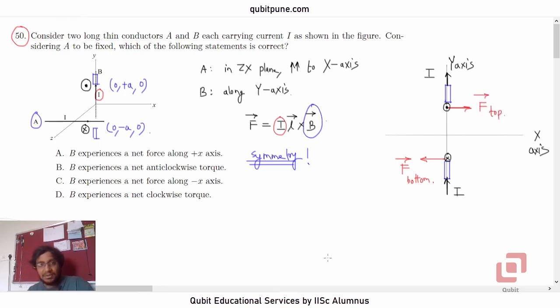F top. See because let's say we are estimating F bottom, it will be I L bar cross B bar. Correct?